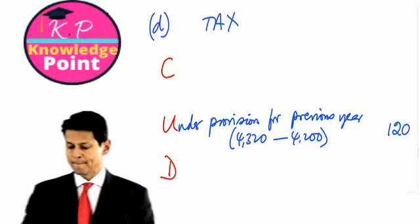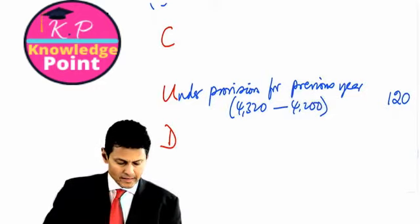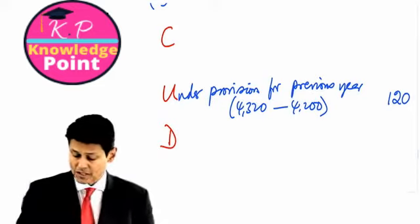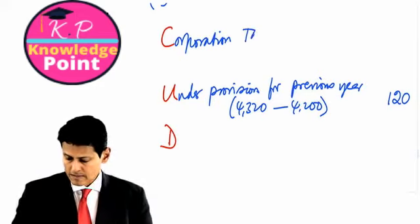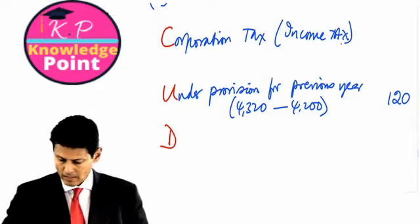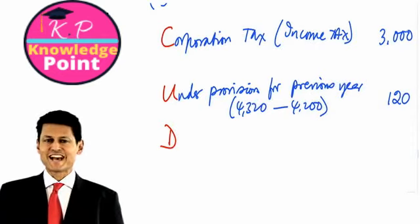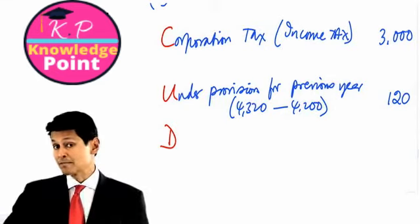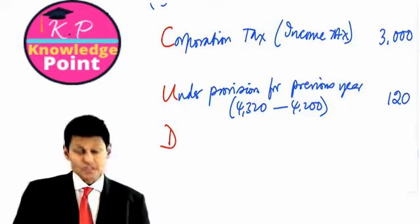At the end of every year, you make an estimate of how much you're going to pay. After discussion with the tax authorities, it is quite possible that you might have won the argument, you might have lost the argument. Here, of course, the company has lost the argument. They thought they had to pay 4,200 in thousands, but they actually did have to pay 4,320 in thousands. So 120 is under-provided. Since we've established that figure, let's bank our mark by putting it down on paper. Under-provision for previous year. And if you can save 4.320, take away 4,200, that would be marvelous. 120. Always one mark in the exam.